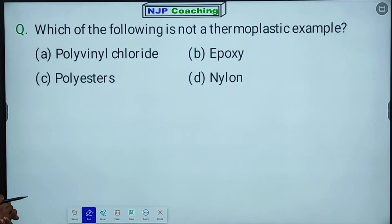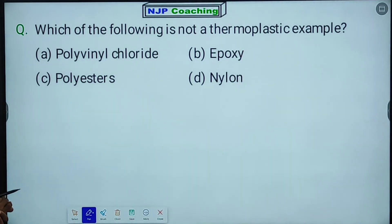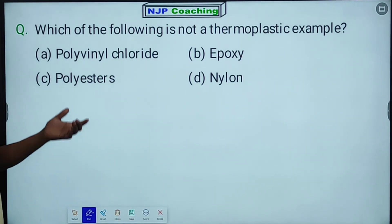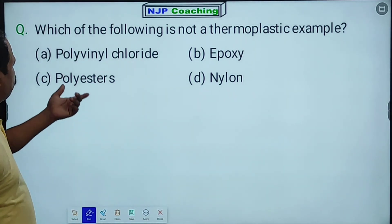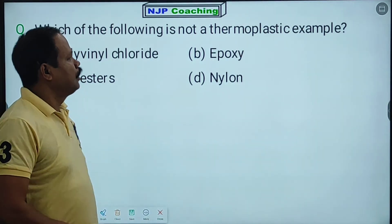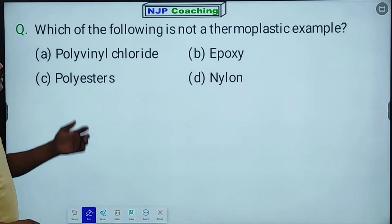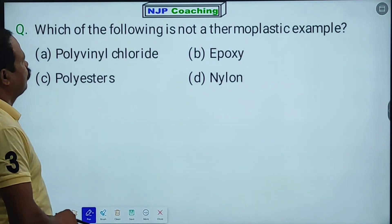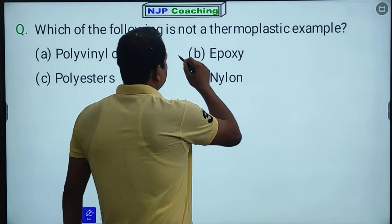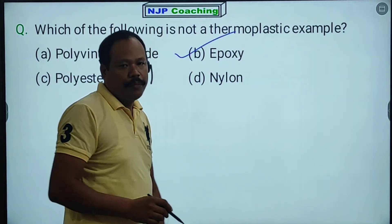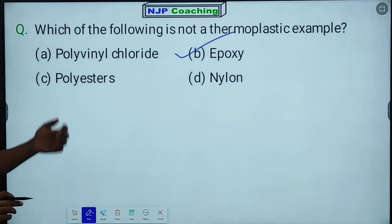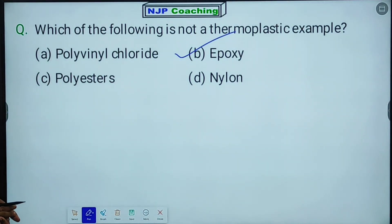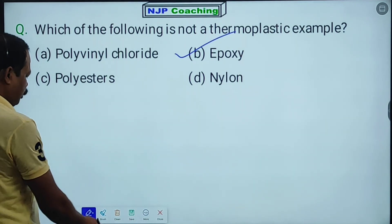Which of the following is not a thermoplastic? Polyvinyl chloride, polystyrene, and nylon are thermoplastics. Epoxy resin is not a thermoplastic — it is a thermosetting polymer.